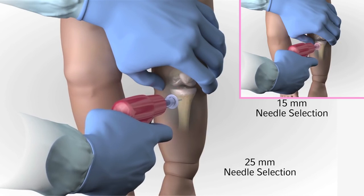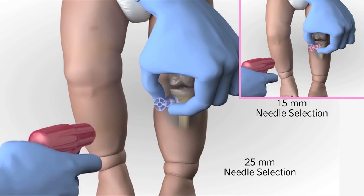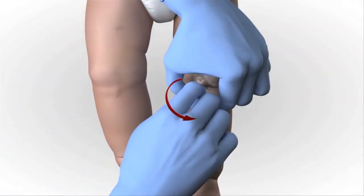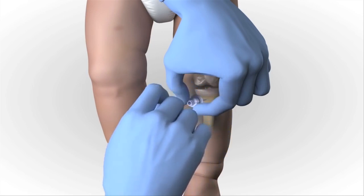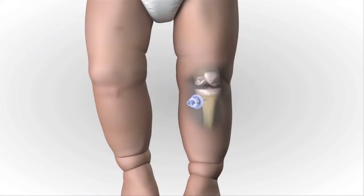Gently drill. Immediately release the trigger when you feel the pop or give as the needle set enters the medullary space. Avoid recoil. Do not pull back on the driver when releasing the trigger. Hold the hub in place and pull the driver straight off. Continue to hold the hub while twisting the stylet off with counter-clockwise rotations. The catheter should feel firmly seated in the bone.